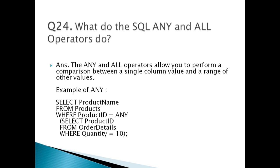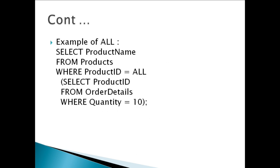Question twenty-four: What do the SQL ANY and ALL operators do? The ANY and ALL operators allow you to perform a comparison between a single column value and a range of other values. I have given an example of ANY — a subquery has been used. This SQL statement lists the product name if it finds any records in the order details table with quantity equal to 10. This returns true because the quantity column has some values of 10.